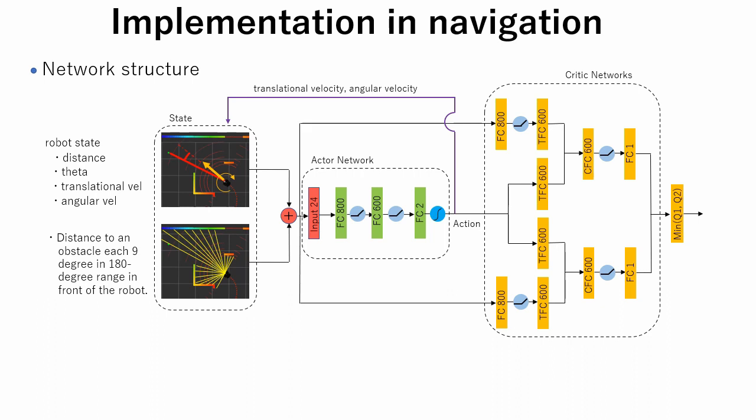As has been described in the previous slide, clipped double Q learning trick is used in this network, so there are two identical networks in one critic network.